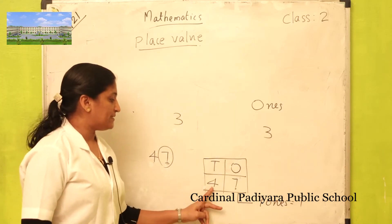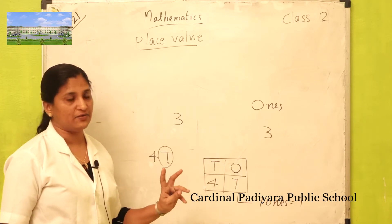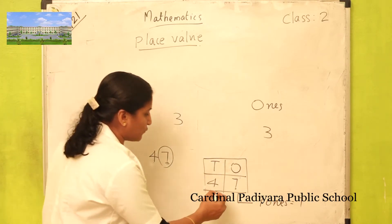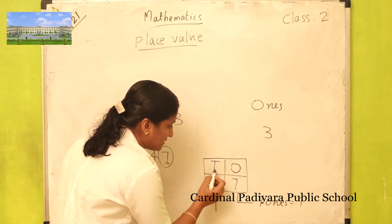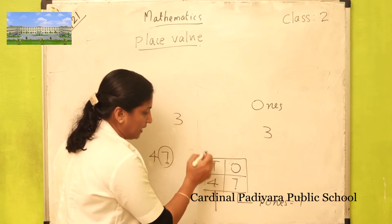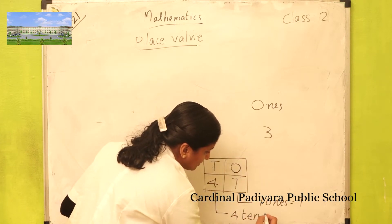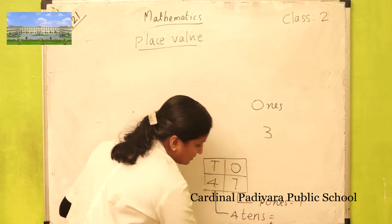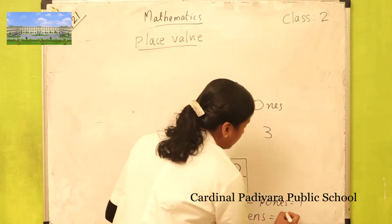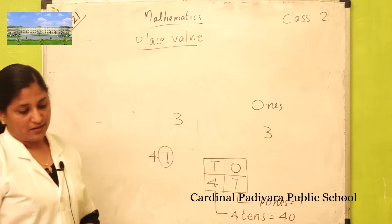What is the place value of four in forty-seven? Four is in tens place. How many tens? Four tens. What is the value of four tens? Four tens is forty.